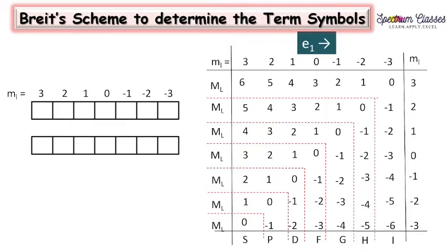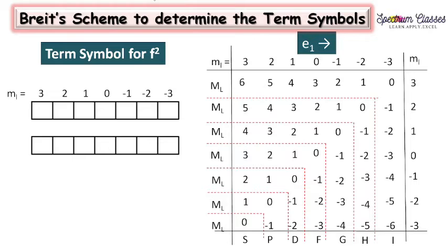Hello everyone, welcome back to Spectrum Glasses. Today in this video we are going to discuss the term symbols for f2 configuration. In this configuration we are having 91 microstates, but we are going to draw the term symbols for this f2 configuration by using the Brits scheme. In this scheme we are having only such type of configurations like p2, d2, and f2 configurations — these are two equivalent electrons.